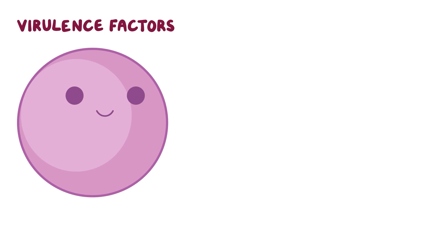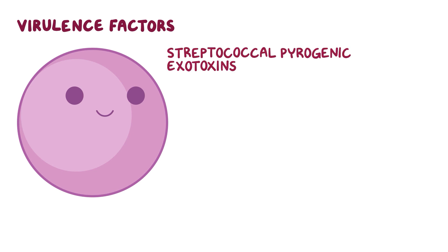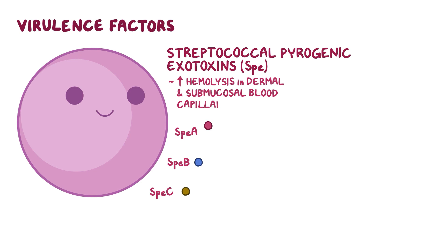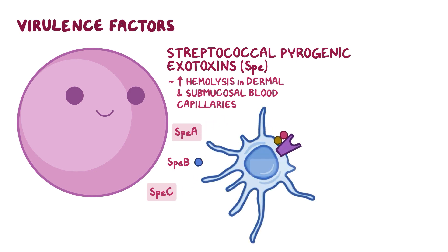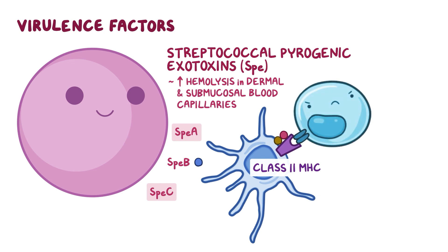Strep pyogenes also uses erythrogenic toxins, also called streptococcal pyrogenic exotoxins (SPE), which come in three types: SPEA, SPEB, and SPEC. This leads to increased hemolysis in the dermal and submucosal blood capillaries. SPEA and SPEC are superantigens, meaning they don't need to be eaten up and processed by an antigen-presenting cell like a macrophage to generate a T cell immune response. Instead, they interact immediately with a class II MHC molecule on the macrophage surface, forming a superantigen-MHC complex, which then interacts with a T cell receptor and stimulates up to 30% of the entire T cell population.